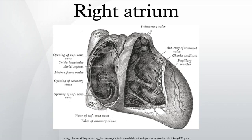The crista terminalis of His is a ridge separating the muscular and smooth-walled parts of the right atrium. The interatrial septum is a barrier separating the right atrium from the left atrium. The fossa ovalis is the remnant of the closure of an opening that was present within the interatrial septum of the fetal heart, where it is called the foramen ovale. It is a depression that looks like a thumbprint in the interatrial wall.